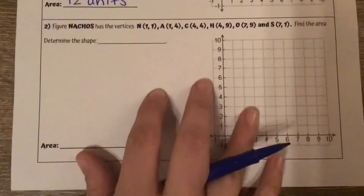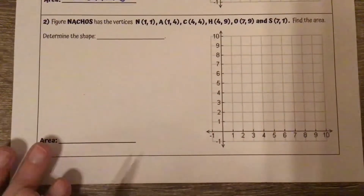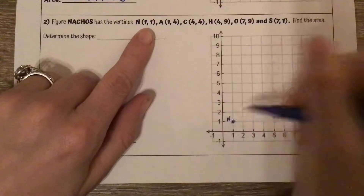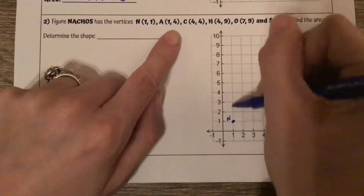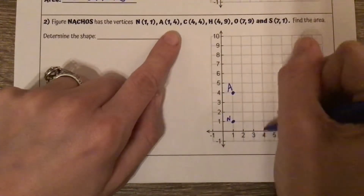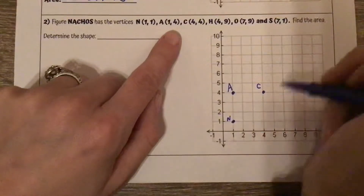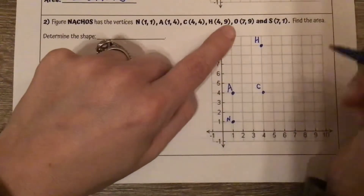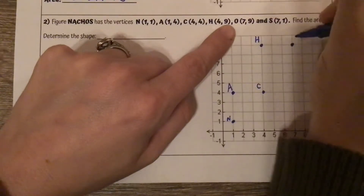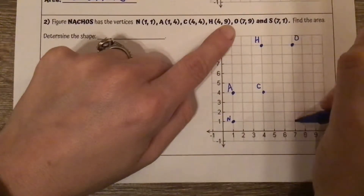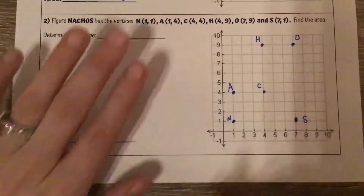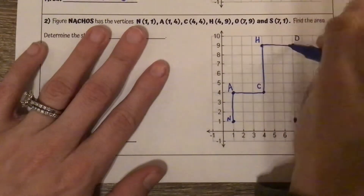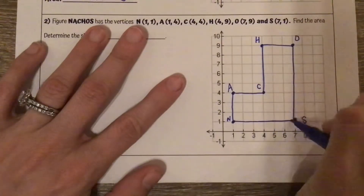Let's try another one — number two. Figure NACHOS has the following vertices. N is at one, one. A is at one, four. I'm going to connect these in order: N to A, A to C, C to H, H to O, O to S, and back to N.